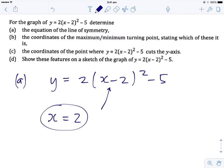The maximum minimum turning point, stating which it is. So the turning point of the vertex here is going to be 2, negative 5, shifted across 2 and down 5. Because the x squared term is positive, it's always going to be this way up. So that means that that point there is a minimum point.